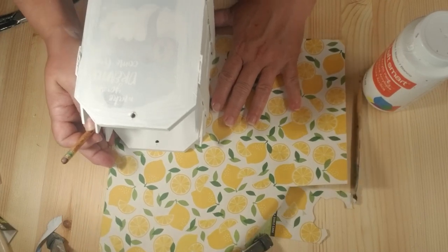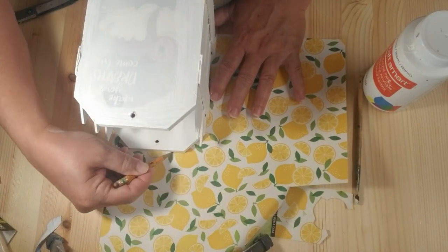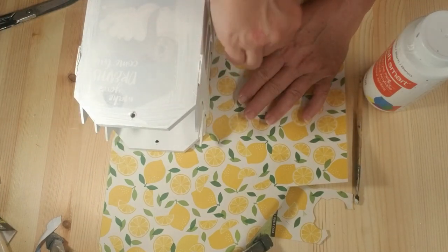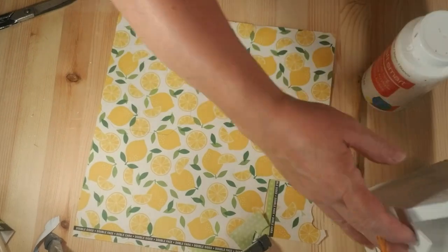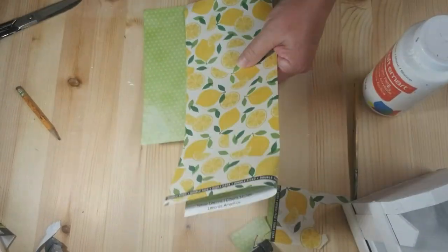I've had this lemon scrapbook paper hanging around my house for quite a while. I decided to pull it out and use it on the tags. So I'm going to just trace out the shape of the tags on either side and then fold the paper in half and cut out two at a time.